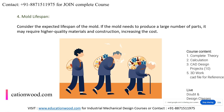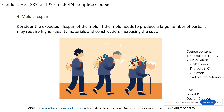Consider the expected lifespan of the mold — this also depends on material. If the mold needs to produce a large number of parts, it may require high-quality material. For example, if you need 10,000 shots, you cannot prepare that in MS core and cavity — for that we have to choose minimum P20 material with a higher grade.